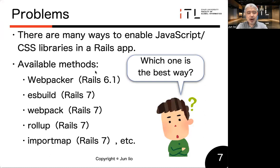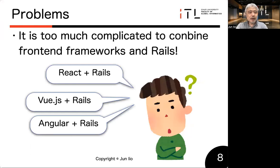So here is the problem: which one is the best way? The current situation is too complicated. It's too complicated to combine front-end frameworks and a Rails back end — for example, React plus Rails views, or Angular and Rails. Which one is better? I don't have the best answer to this problem.